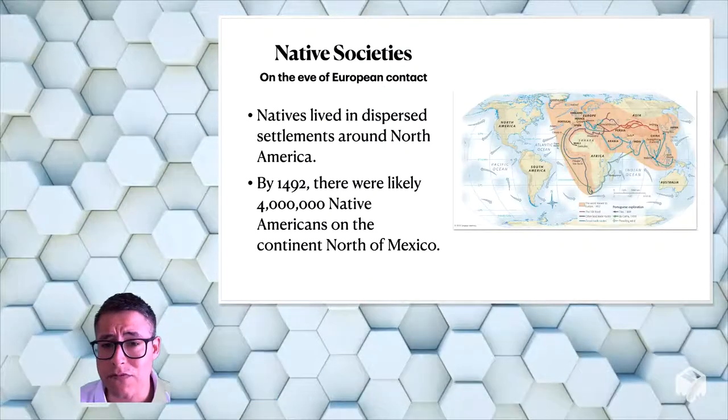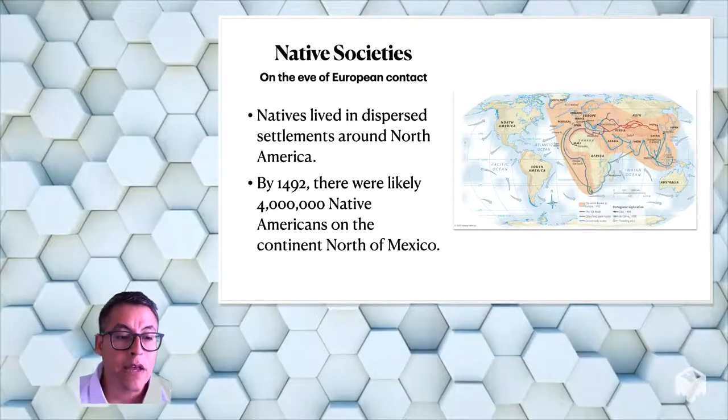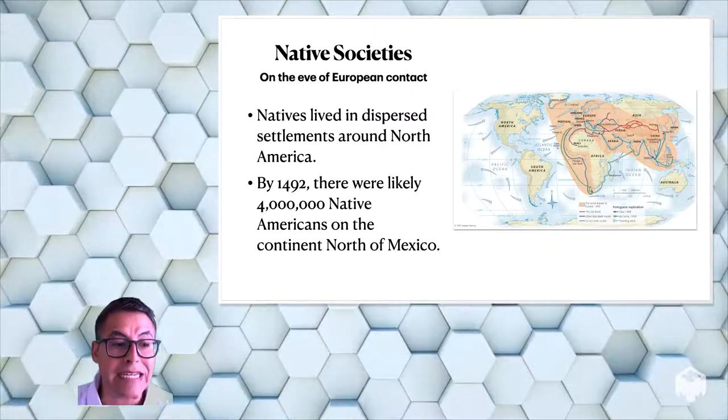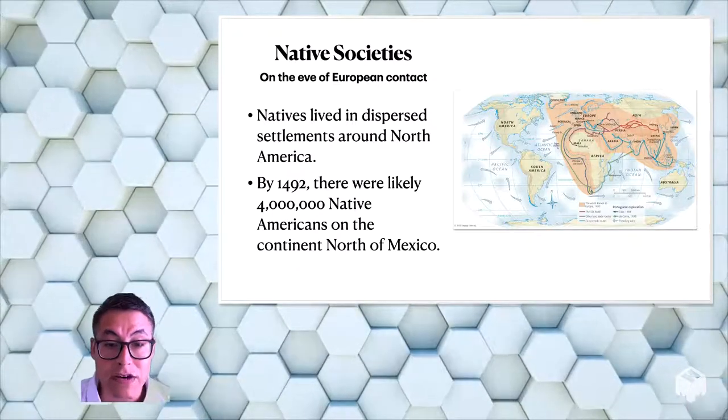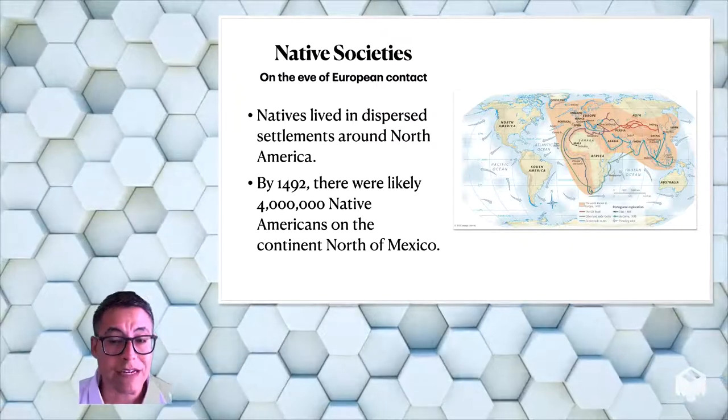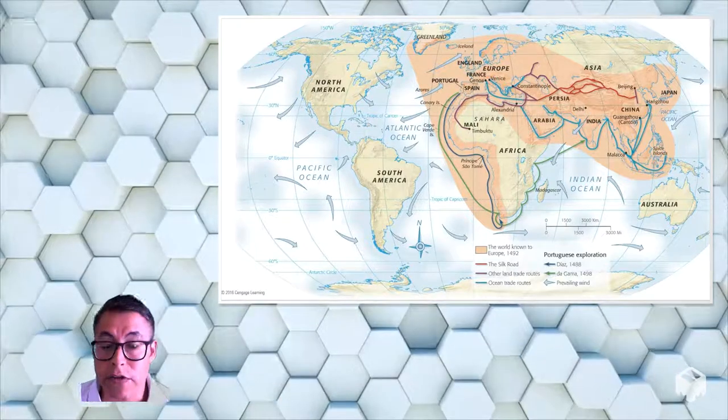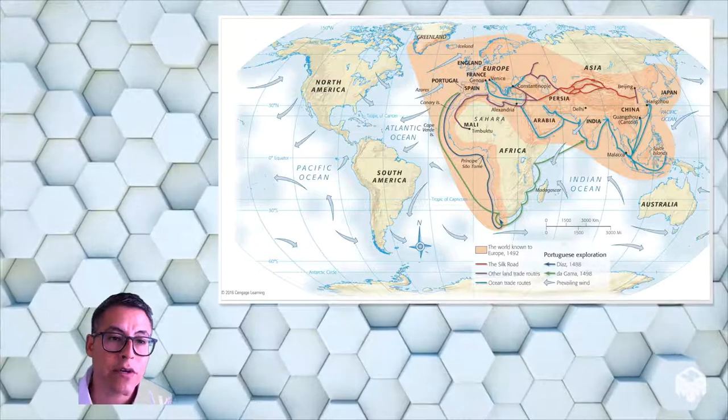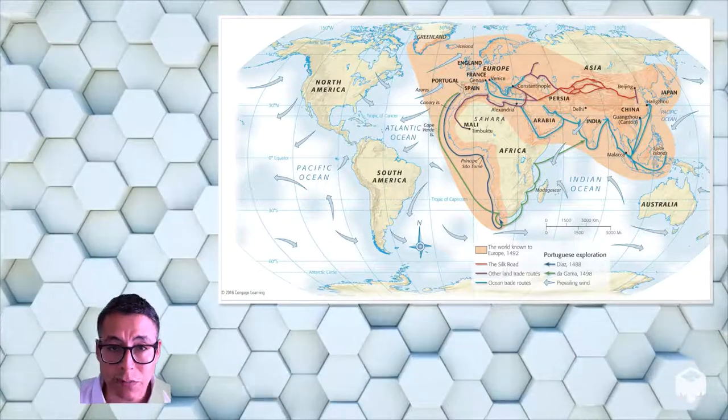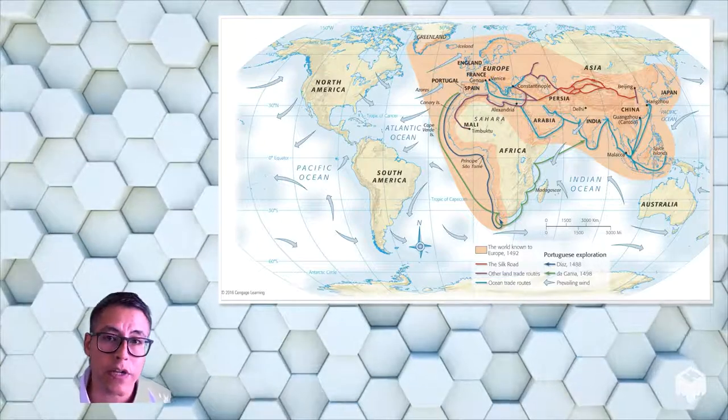And now native societies before European contact were largely separated and sparse across the continent. But by 1492, we historians and scientists estimate that there was about 4 million Native Americans on the continent, especially in this area north of Mexico. So by the time that British, Spanish and French settlers came to North America, there was a lot of people living here already. And a lot of these settlers came to North America by accident. And when they finally decided to establish kingdoms here and establish places where they would settle, a lot of these natives would confront these people that came from Europe. And that's what we're going to learn about next time.